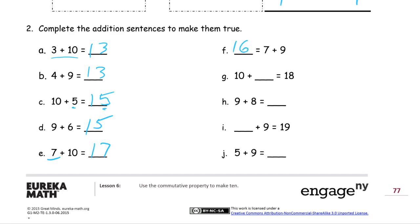Eighteen is going to be ten plus eight — nine plus eight. Nine plus eight is the same as ten plus seven, which is seventeen. And here we have nineteen as a sum — what do we have to add to nine? Ten plus nine is nineteen, so we need a ten. And nine plus five — think ten plus four — fourteen.